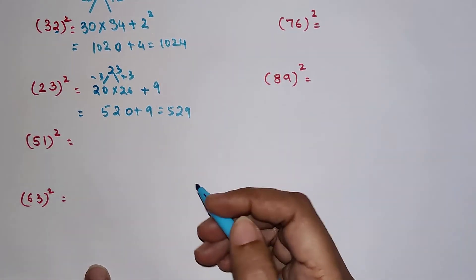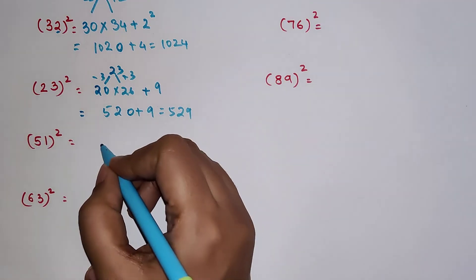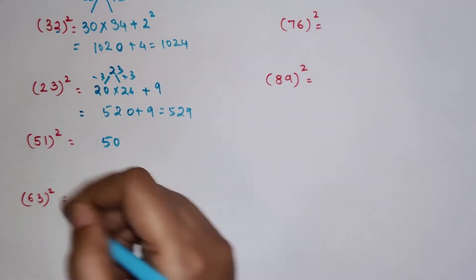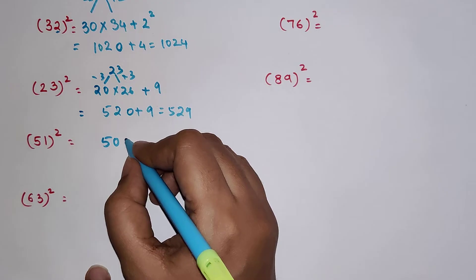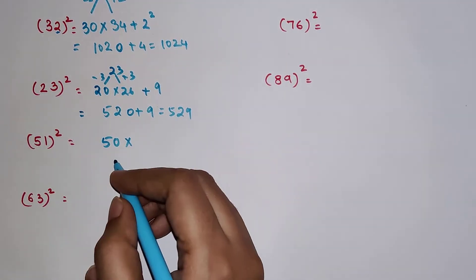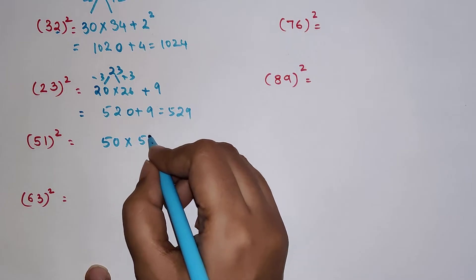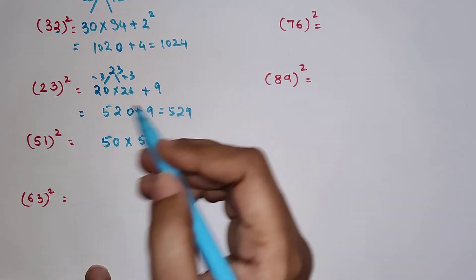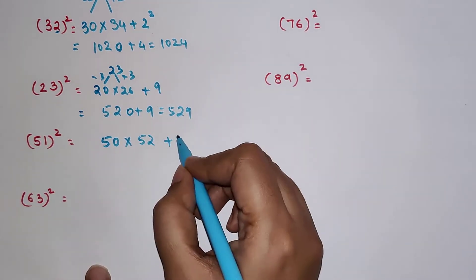51 square. We're going to write 51, which can be rounded off to 50, and we'll multiply it with what? 51 was subtracted by 1 to go to 50, so we'll add 51 plus 1, so 52, plus 1 square which is 1.